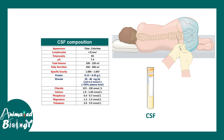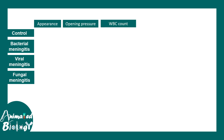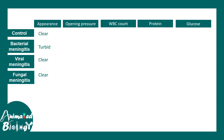Now what really happens when there is an infection? We look at the appearance of the CSF, opening pressure, WBC count, protein content, and glucose level. In a normal case it would be a clear fluid, but in bacterial meningitis the fluid becomes turbid. The protein level is increased for all kinds of meningitis because the blood-CSF barrier and blood-brain barrier are compromised, causing protein to leak in.